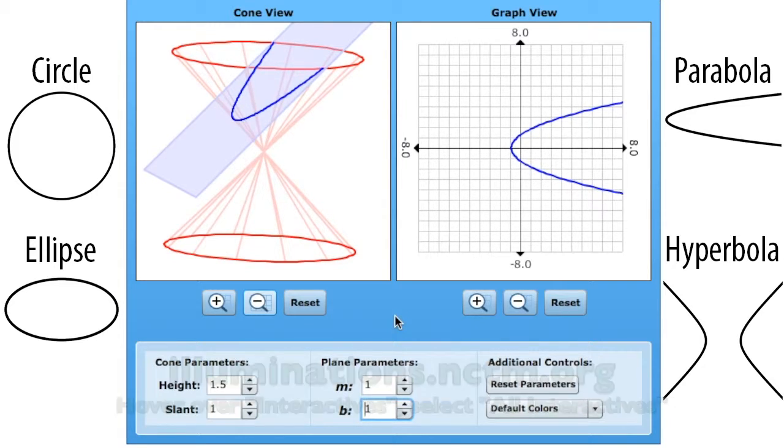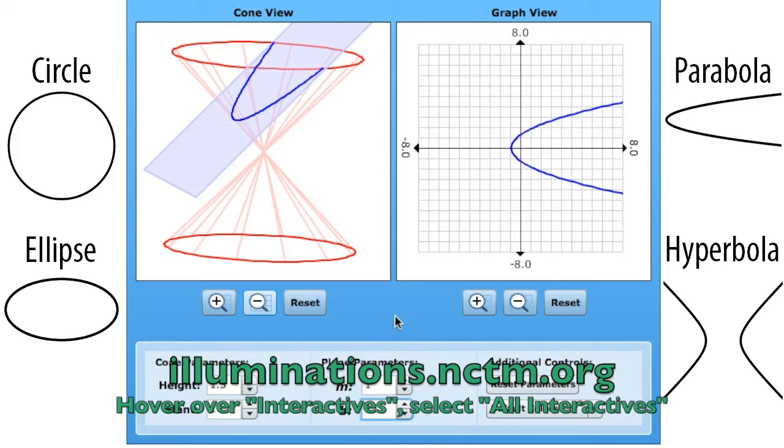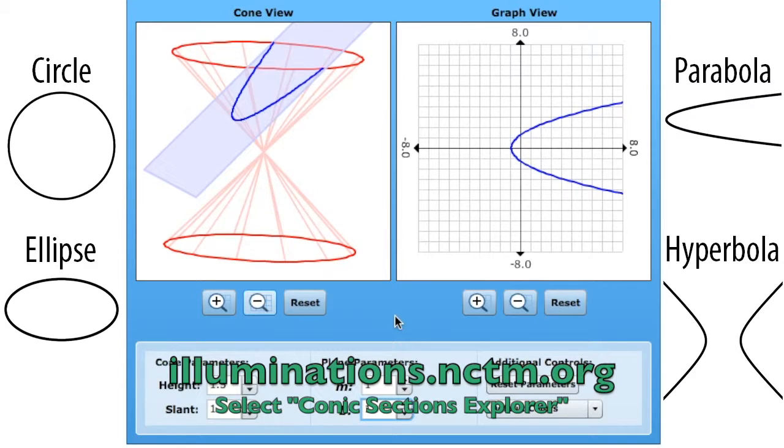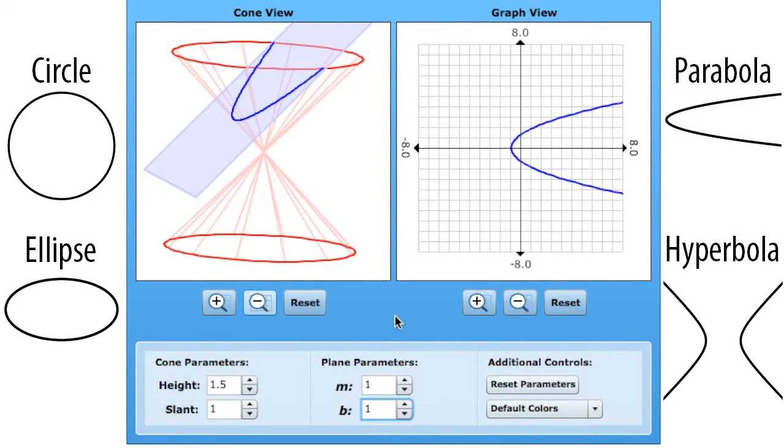So what I want you to do is to go to this website, the link is in the description below, play around with the virtual manipulative, and find the four conic sections. As you know from your studies in pre-calculus, there are four conic sections. There's the circle, the ellipse, the parabola, and the hyperbola. I want you to see when you get a parabola, what is special about the relationship between the cone and the plane. When you get a hyperbola, a circle, and an ellipse, see the relationship between the cone and the plane, both visually, and also look at the numbers. You might want to find a few different times when you see a hyperbola, or a few different times when you see a parabola, or a circle, or an ellipse. Change it up.